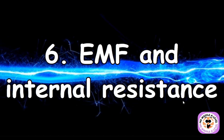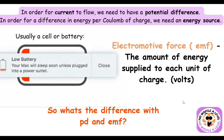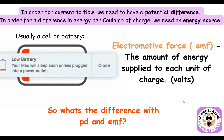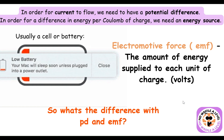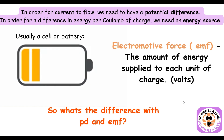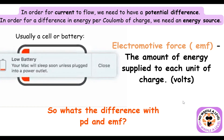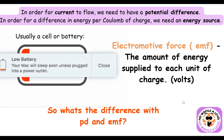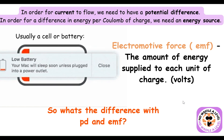Part six: EMF and internal resistance — GCSE students do not need this section. For a current to flow, we need a potential difference, and for there to be a difference in energy per coulomb of charge, we need an energy source. This leads to the concept of electromotive force, or EMF, which is defined in exam terms as the amount of energy supplied to each unit of charge, measured in volts.